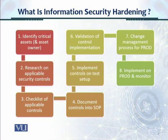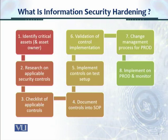In step number three, we develop a checklist of applicable controls after thoroughly researching what security controls apply to that IT asset. In step number four, we document the controls in a SOP — standard operating procedure — so it is documented and engineers follow the same process every time. In step number five, we implement the controls in a test setup first, not in the production environment, to make sure all controls are implemented properly.